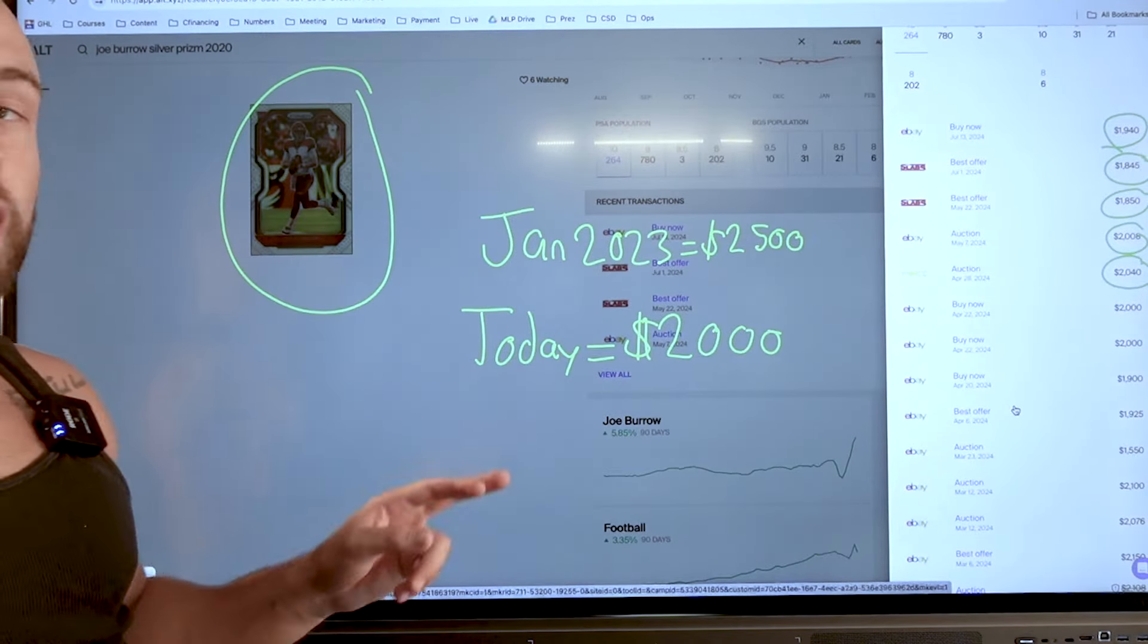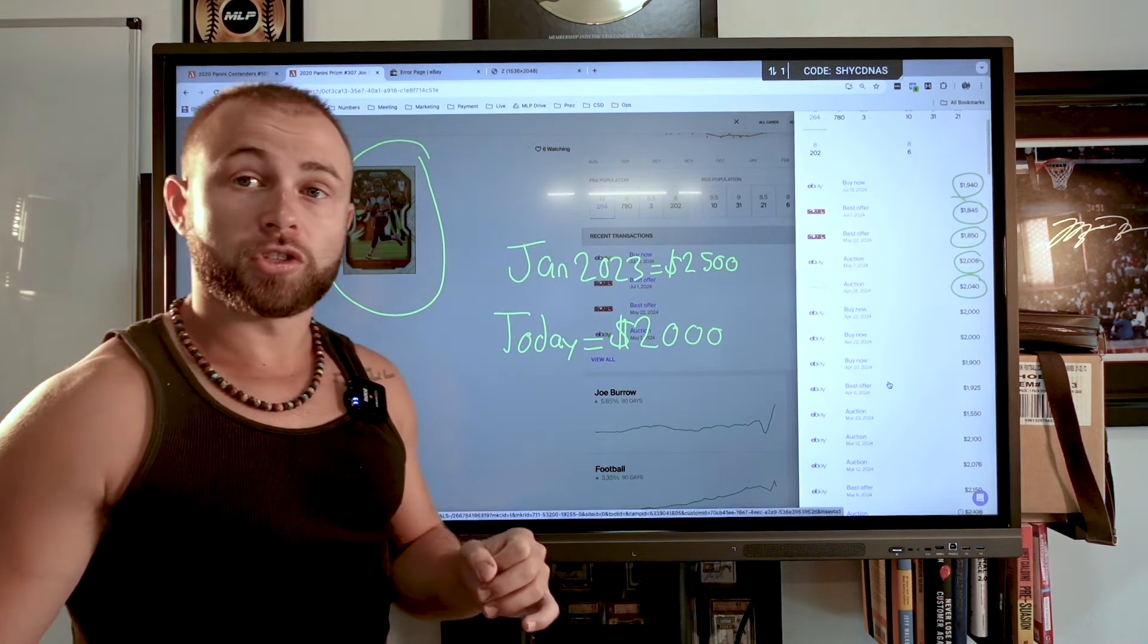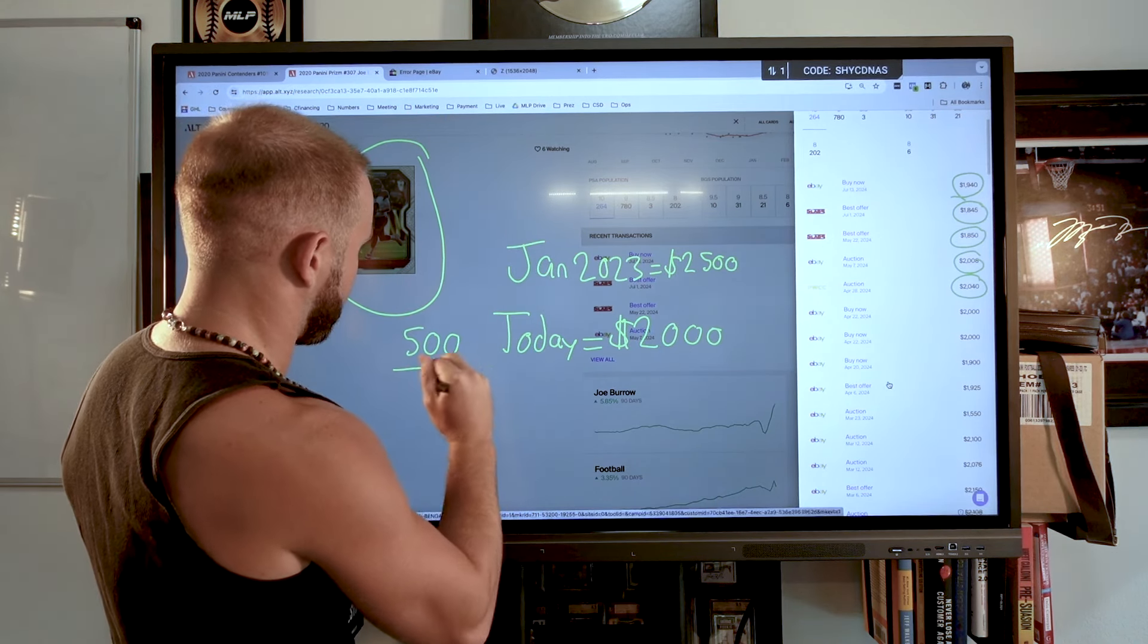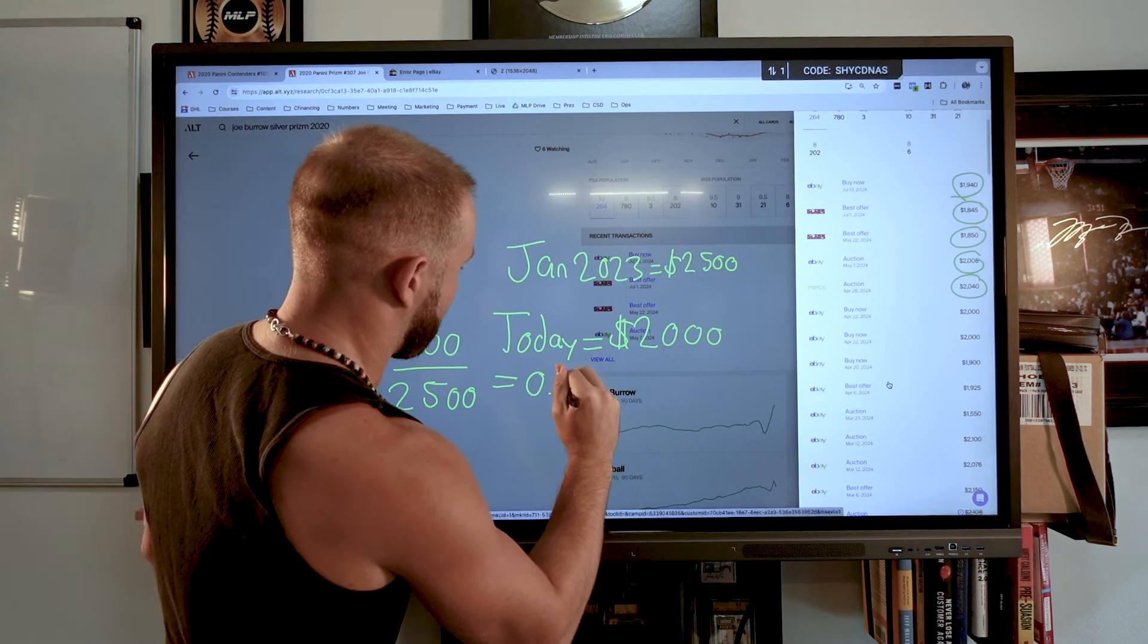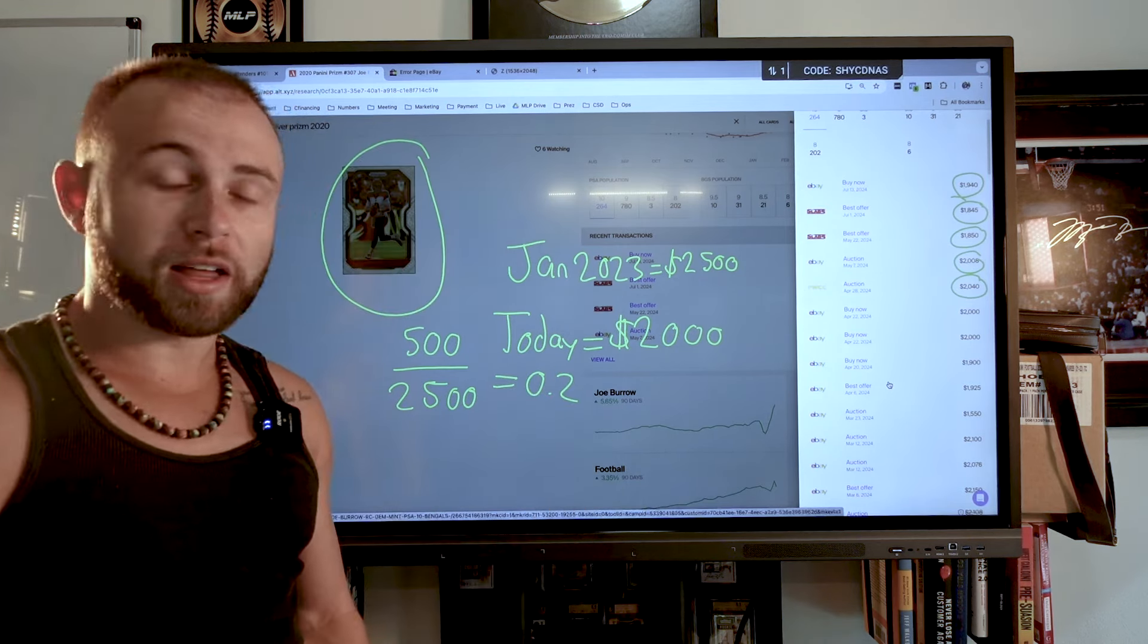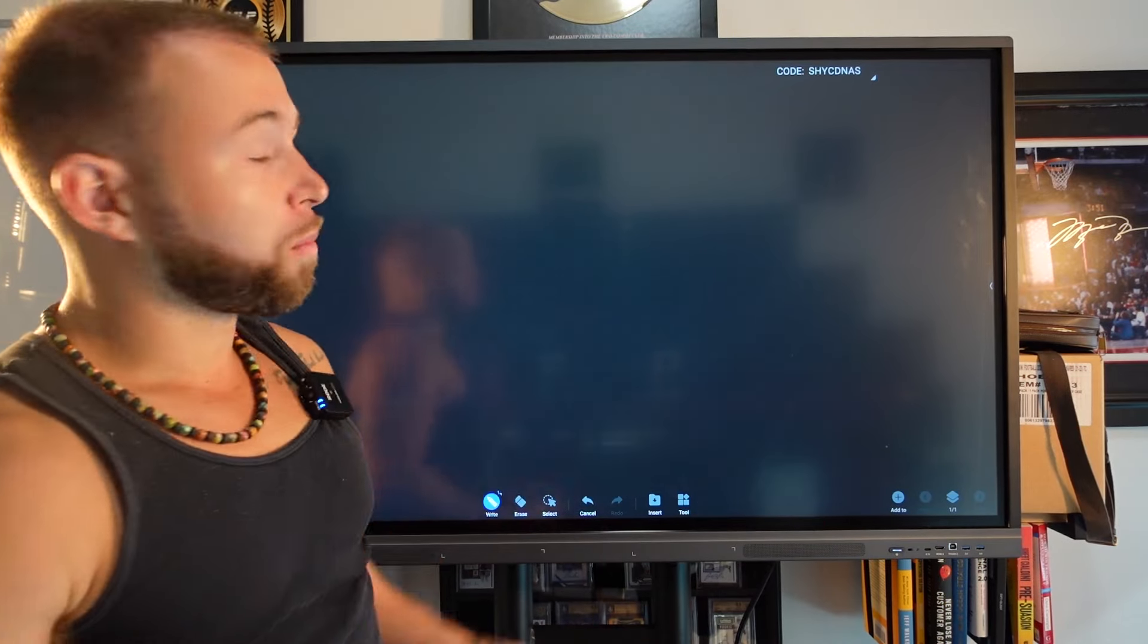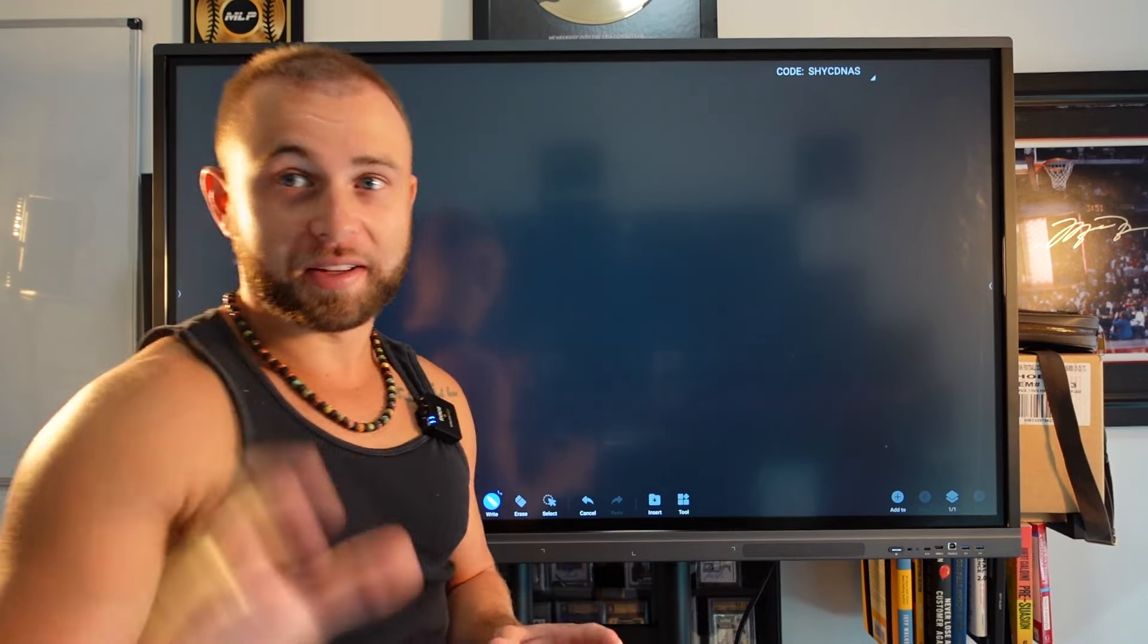So what does this tell us? If this card in January of 2023 was $2,500, and now it's worth $2,000, if you do the math and you do $500 divided by $2,500, this equals 0.2. So what does that tell us? Joe Burrow's value has went down 20%, 20% since last January. All right, so let's go on this whiteboard here, or blackboard, and let's break down all of this math. So stay with me because this is about to be a lot of math. So bear with me here.